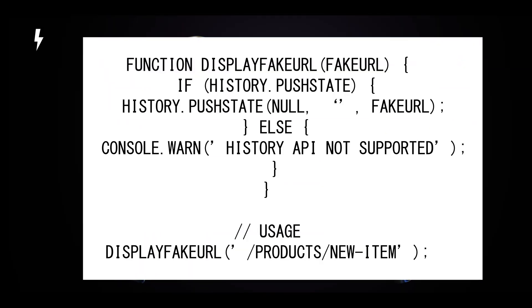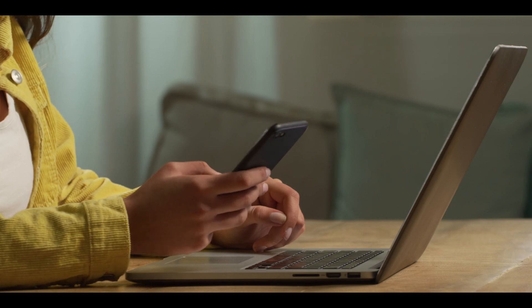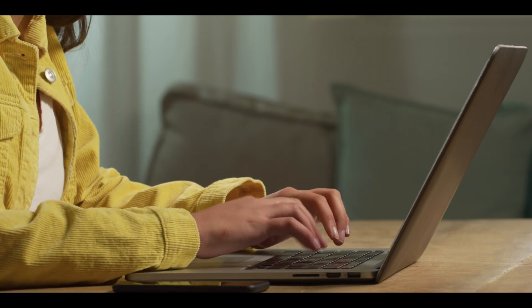Here is a simple example of how this might be used in real practice, especially by a hacker. This function checks if the browser supports the History API before attempting to change the URL. Regarding handling page reload: if the user refreshes the page with a fake URL, the server needs to handle that request appropriately. You may need to implement server-side routing or redirection to manage these scenarios.